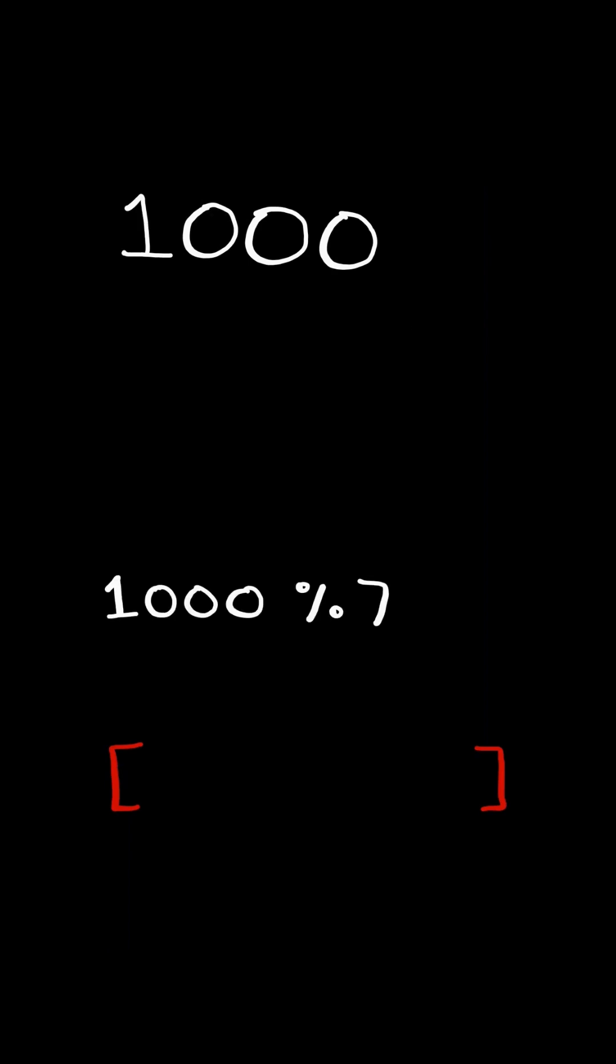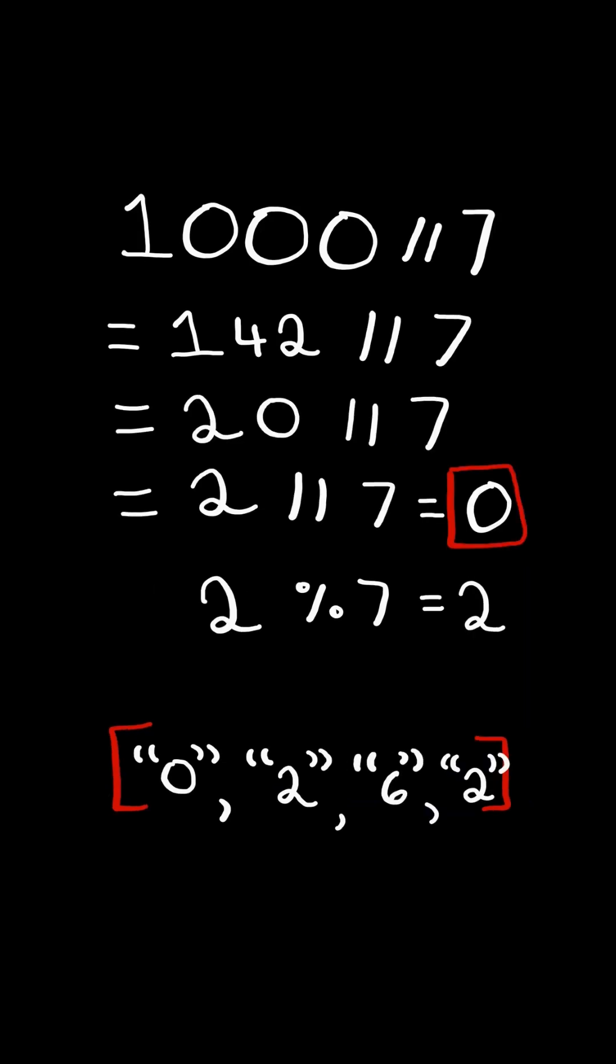We then mod the number by 7. This gives us the coefficient. We then integer division the number by 7, and continue the process with the new number. The remainder is 2, and we continue integer divisioning the number, and we stop the process when the number reaches 0.